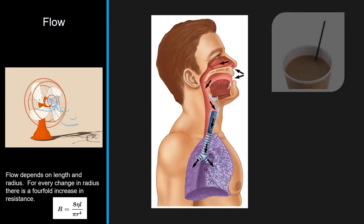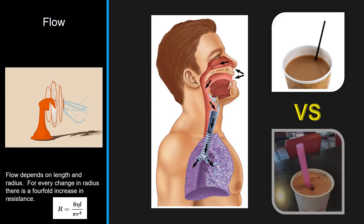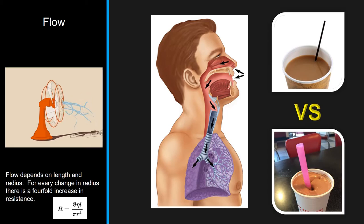That's Poiseuille's law at the bottom there. Which means that for every reduction in the diameter of the breathing structure, it becomes four times more difficult to breathe. So if I were to make your airway smaller, it becomes much more difficult to breathe. Or if I were to make your airway longer, it also becomes more difficult. Flow depends on length and radius — for every change in radius, there's a fourfold increase in resistance. That's Poiseuille's law.